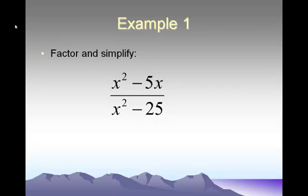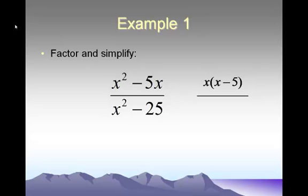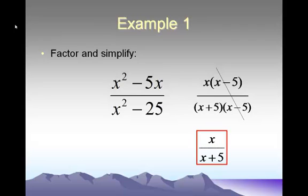What we do instead is factor. First, factor the top of the fraction using greatest common factor. Both terms have an x, so we take that out and are left with (x minus 5) inside the parentheses. On the bottom, we use perfect squares: x squared is a perfect square, negative 25 is a perfect square, giving factors (x + 5) and (x minus 5). Notice x minus 5 appears on both top and bottom, so we cancel it out. Our final answer is x over (x + 5).